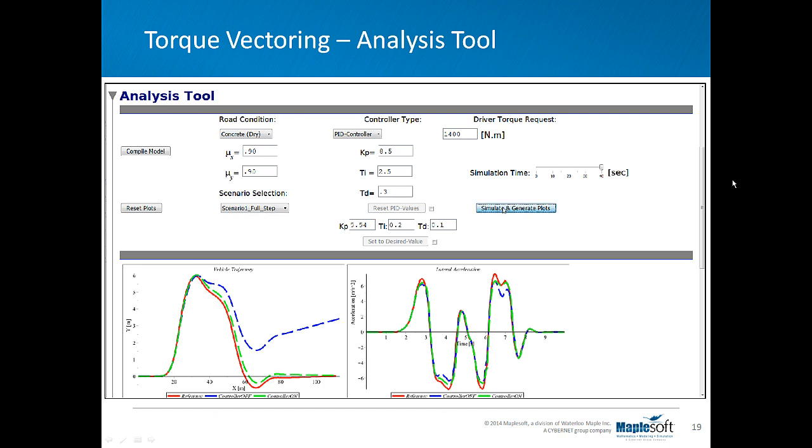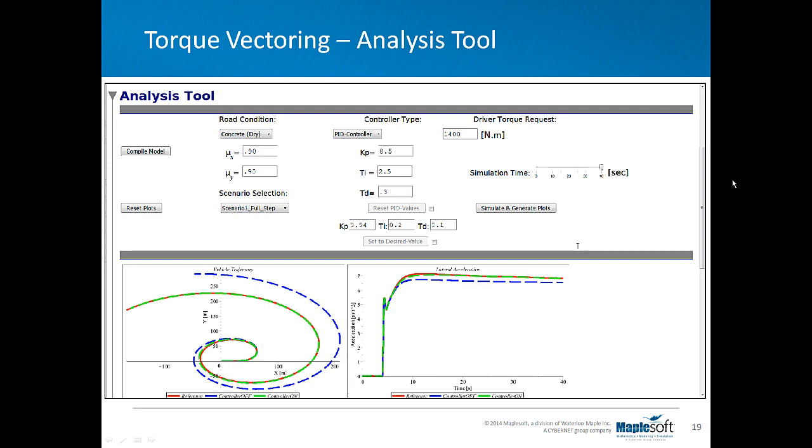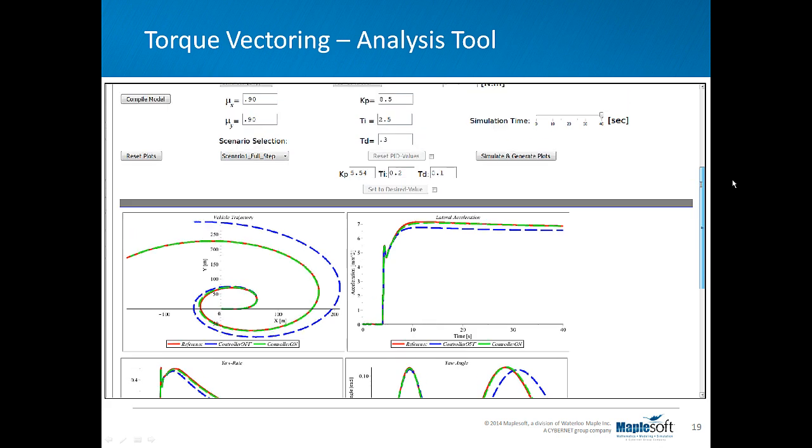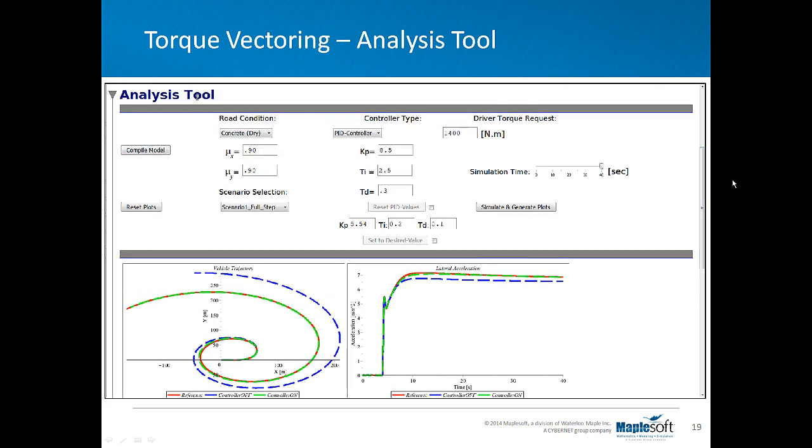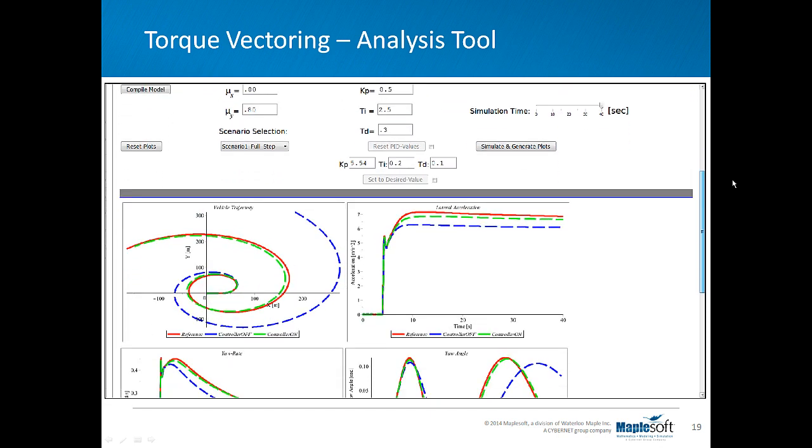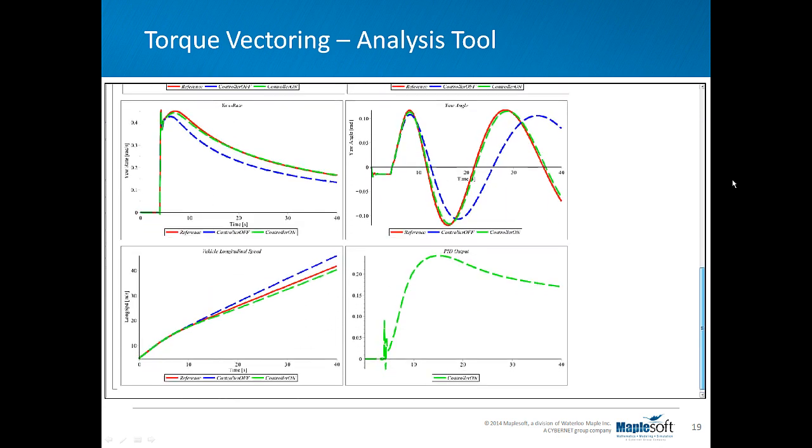Now changing the scenario to full steps steering angle and first running for the dry path, we can see the deviation between vehicle with controller on and the vehicle with controller off. And simply decreasing the coefficient of frictions even adds to that deviation for the vehicle without the controller.